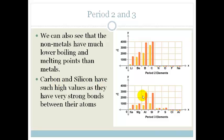And carbon and silicon have such high values because they've got very strong bonds between their atoms. Remember carbon and silicon are in group 4, and group 4 is a very special group. Later on we'll tell you a little bit more about why carbon and silicon are so special.